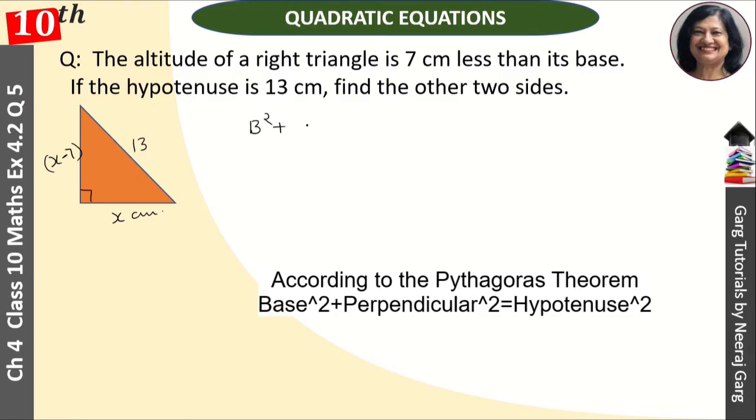Base kitna? x. So x square plus x minus 7 ka square, that is equal to 13 ka square.